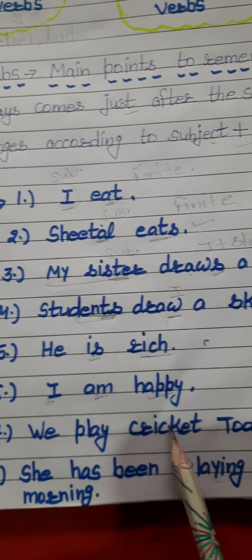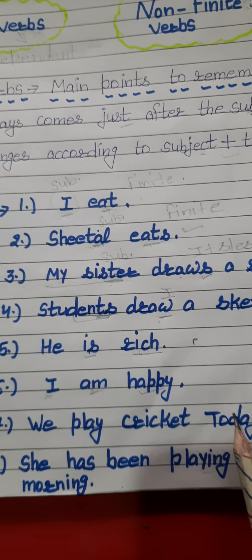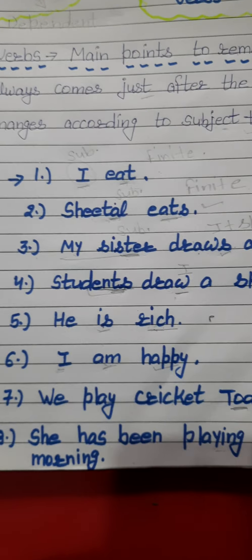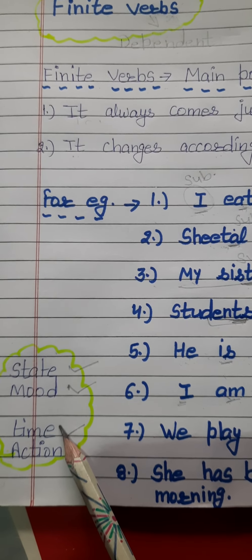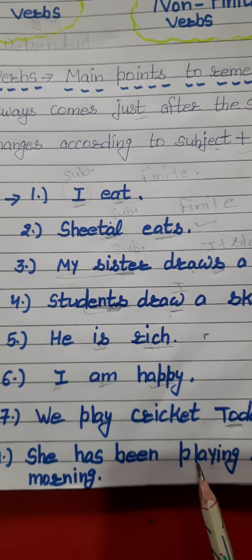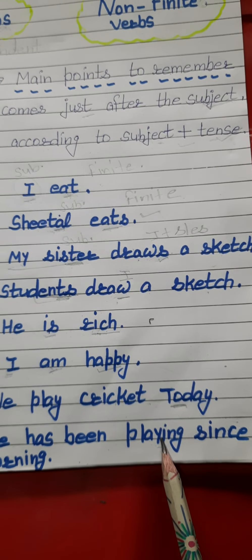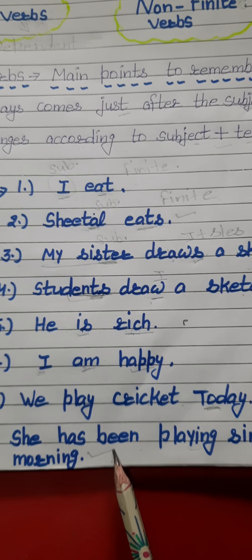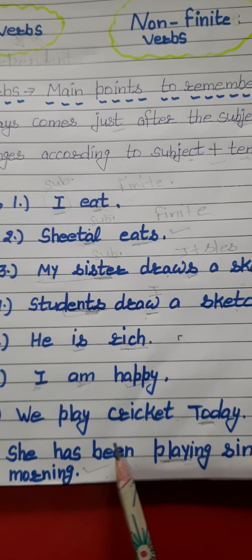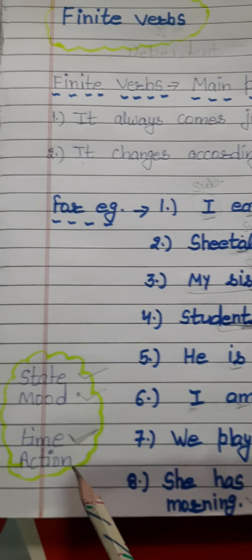Next: 'We play cricket today.' Here we are getting to know about the time — that we play cricket today. Finite verbs also tell us about the time. They also tell us about an action: 'She has been playing since morning.' Here 'has been playing' is in present perfect continuous tense, and 'playing' tells us that the action is still ongoing.